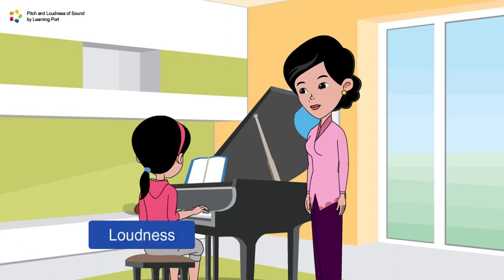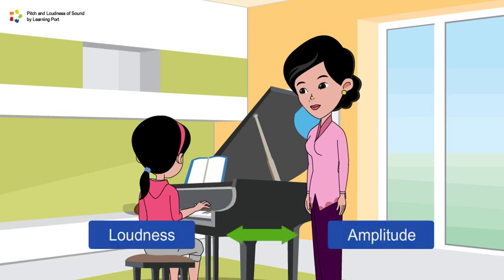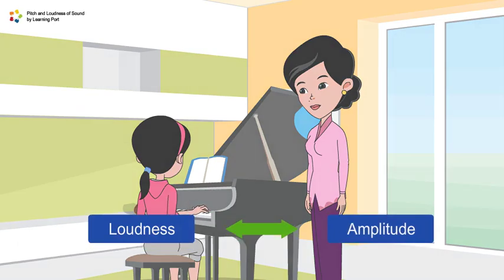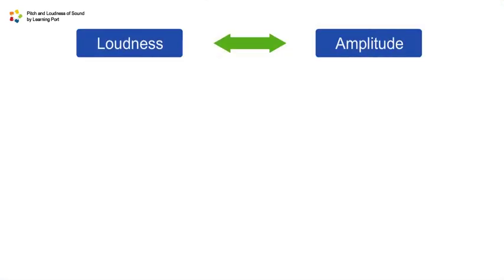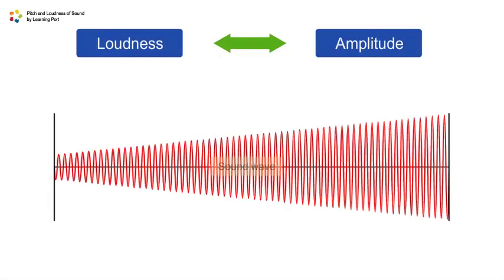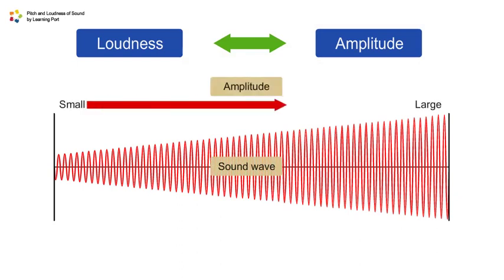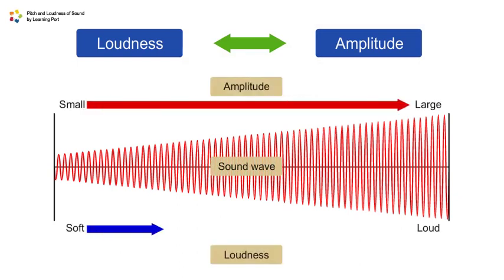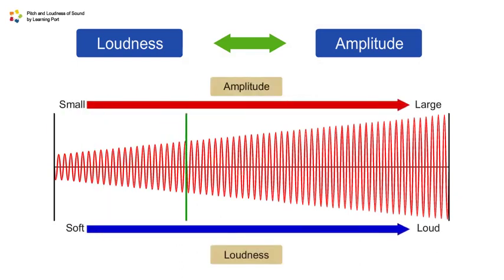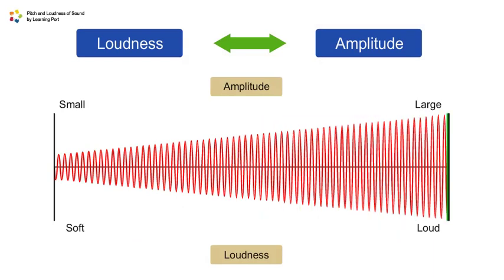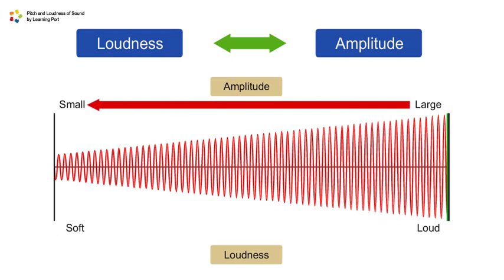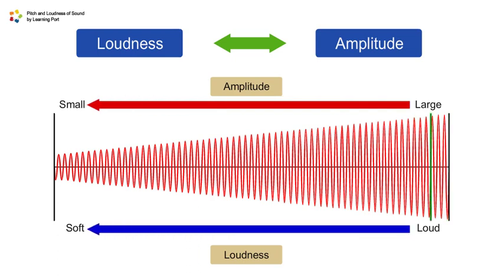The loudness of a sound depends on the amplitude of the sound wave that is produced by the sound. When the amplitude of the sound wave increases, the sound becomes louder. When the amplitude of the sound wave decreases, the sound becomes softer.